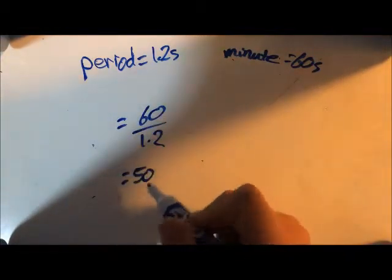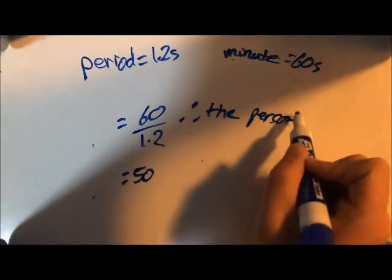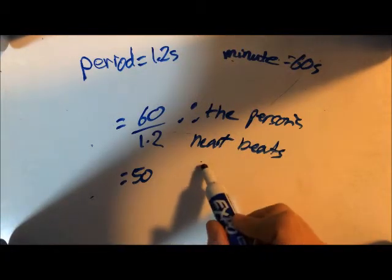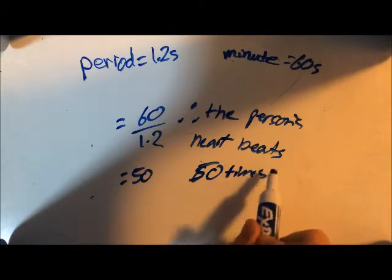We already know the person's heart beats once every 1.2 seconds. So we must divide 60 seconds by the period. This gives us an answer of 50. This means this person's heartbeat beats 50 times per minute.